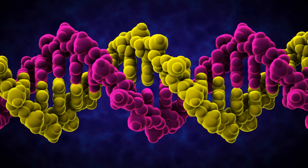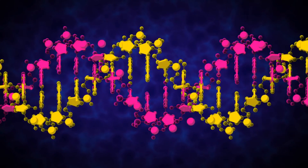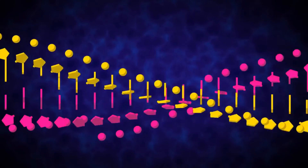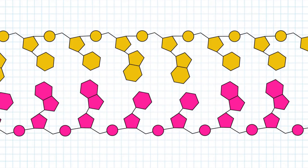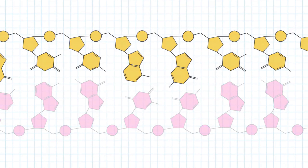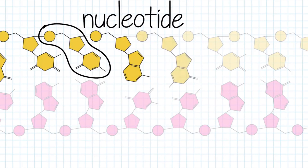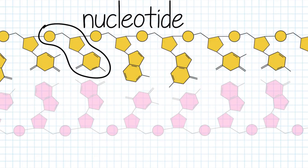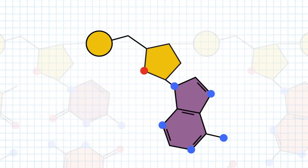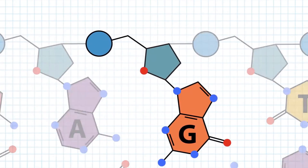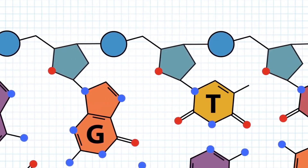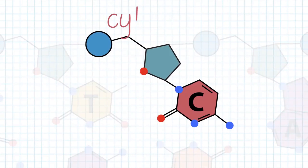Now, let's move to a more simplified representation of DNA to discuss the details. We can unwind the double helix like this, so that we can see the chemical structure inside. Each strand is a polynucleotide, meaning the strand is made up of many individual units called nucleotides. A nucleotide has three components: the 5-carbon sugar, a phosphate group, and one of four possible nitrogenous bases — adenine, guanine, thymine, and cytosine.